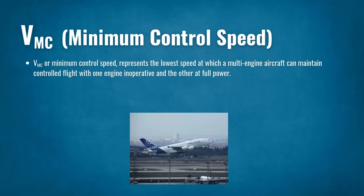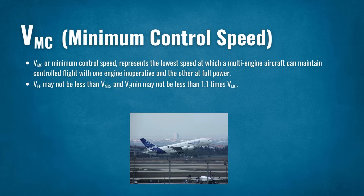VMC, or Minimum Control Speed, represents the lowest speed at which a multi-engine aircraft can maintain controlled flight with one engine inoperative and the other at full power. VEF may not be less than VMC, and V2 minimum may not be less than 1.1 times VMC.